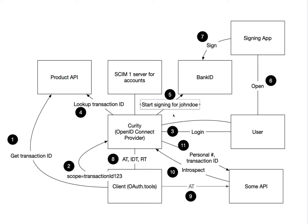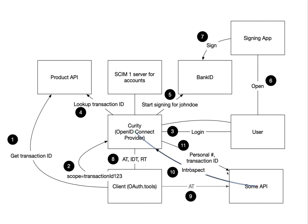We're going to send that text over to a digital signing service, which in my case is going to be bank ID, and the end user is going to open their signing application. They'll see that text that we constructed and sign the transaction. Once they do, Curity will notice that and issue an authorization code, which we'll redeem to obtain an access token, an ID token, and a refresh token. We'll then use the access token to call some API, and in the API — because the token is opaque — we'll introspect it and get back their personal number and the transaction ID that was signed.